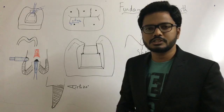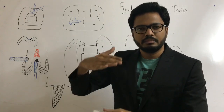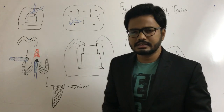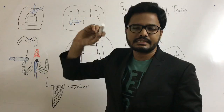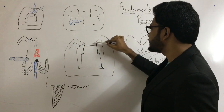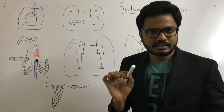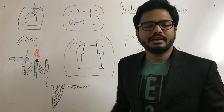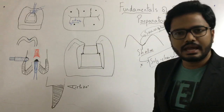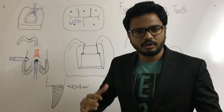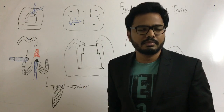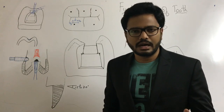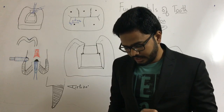The junction between a prepared tooth surface and an unprepared tooth surface is called the cavo surface margin, and the angle between these two surfaces is the cavo surface angle. For amalgam, the cavo surface angle should be a minimum of 90 to 110 degrees — at 90 degrees, we call it a butt joint. For composite, we go for bevel placement. For cast restorations, the cavo surface angle is 30 to 40 degrees.